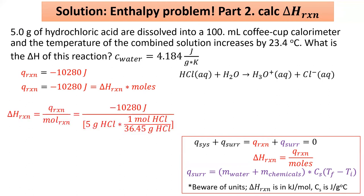So to get delta H, I need to take the total energy of this reaction and divide it by the total moles of this reaction. My next step is to turn five grams of HCl into moles of HCl using the molar mass. Finally, we can plug it all in and get our answer negative 74,941 joules per mole. Delta H is typically given in kilojoules, so I'll convert one more time and round to the right number of sig figs.